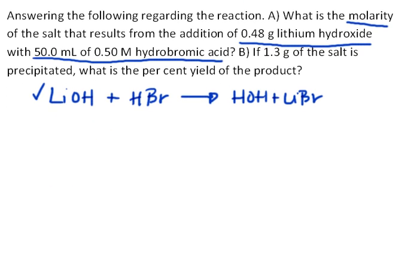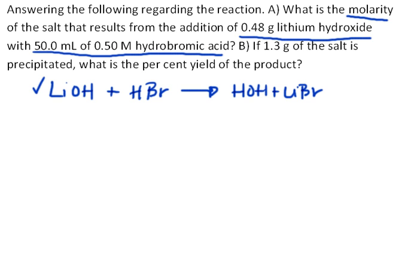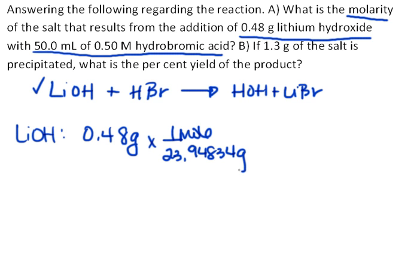The next thing you want to do is find the molar quantities of your reactants so that you can identify which one is your limiting reactant, since that's going to determine the amount of product formed. So let's convert the quantities that they gave us to moles. We were given grams of lithium hydroxide. If we divide by the molecular weight of lithium hydroxide, which is 23.94834 grams, then you find that you have 0.020 moles of lithium hydroxide.